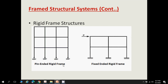In pin-ended rigid frames, the column ends are connected with a pin. In fixed-ended rigid frames, the columns are connected with a fixed support.